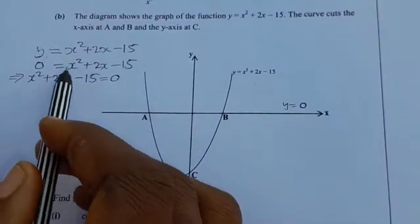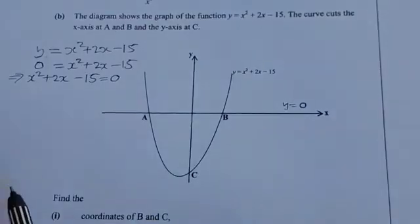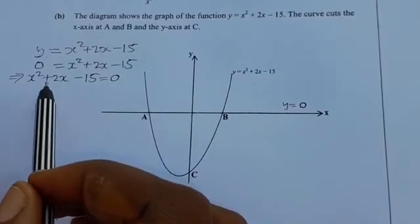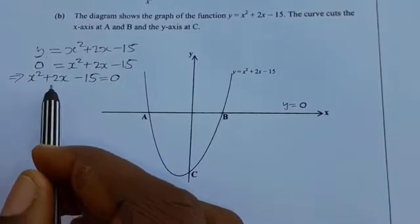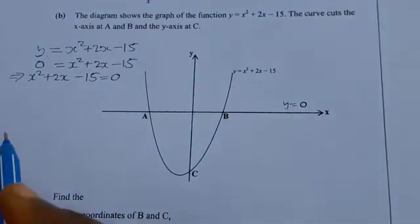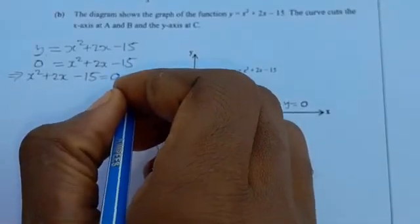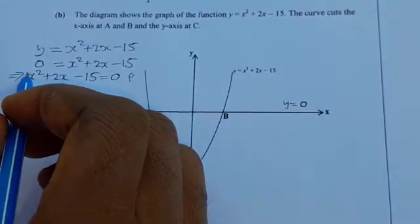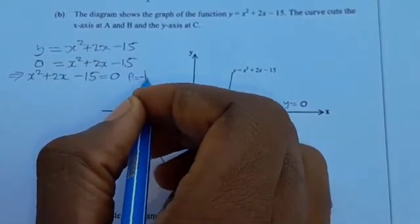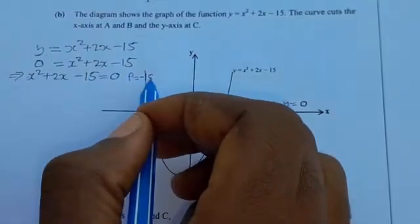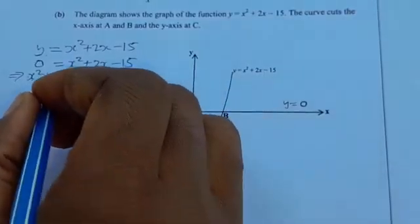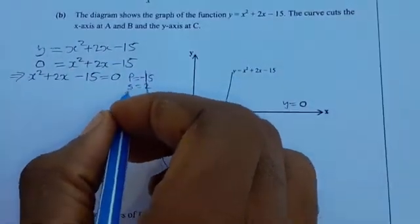We can solve this quadratic equation using any method. In this video we use the factor method. First, find the product by multiplying the coefficient of x², which is 1, by the constant, giving −15. Then the sum is the coefficient of x, which is 2.